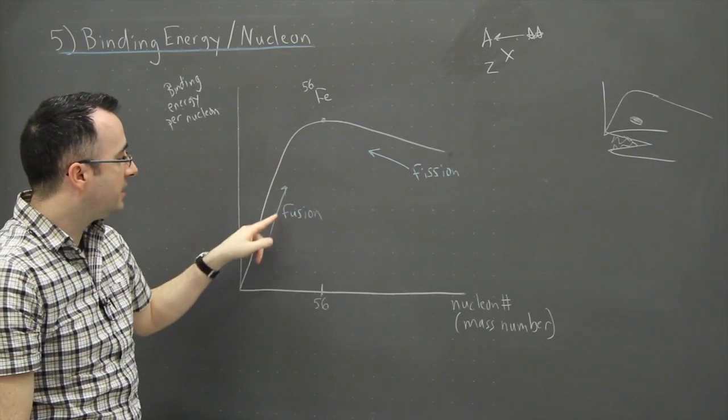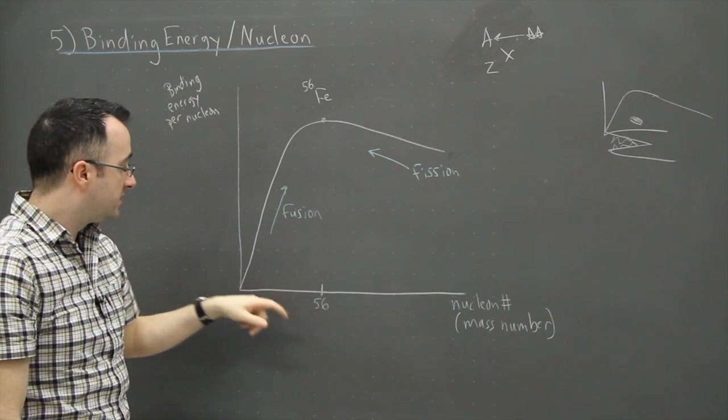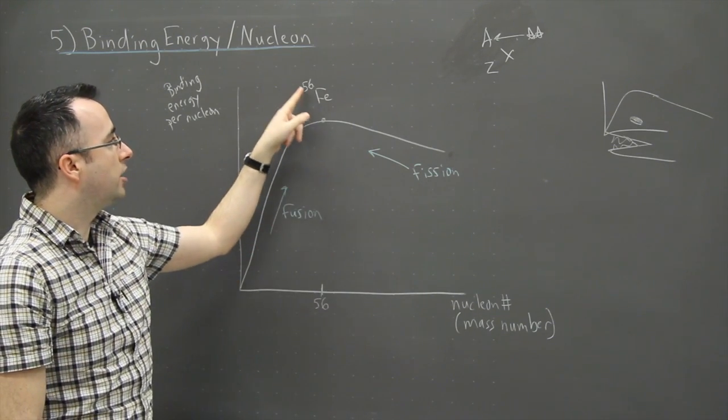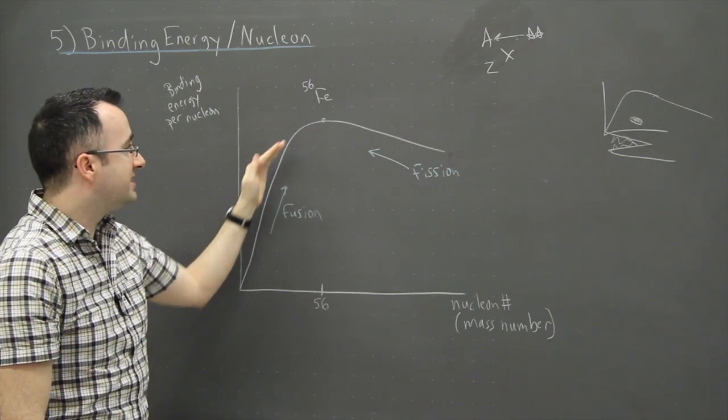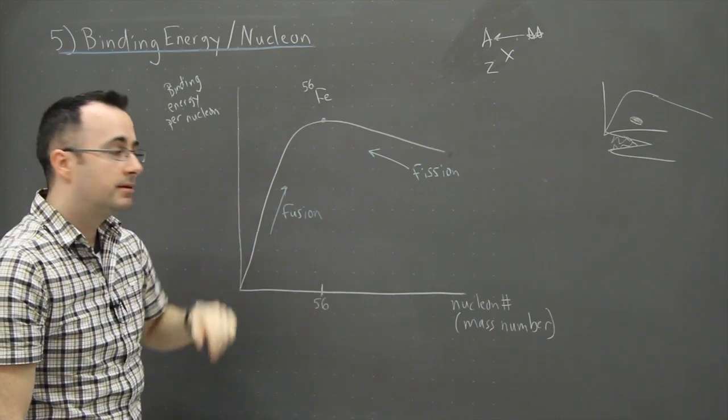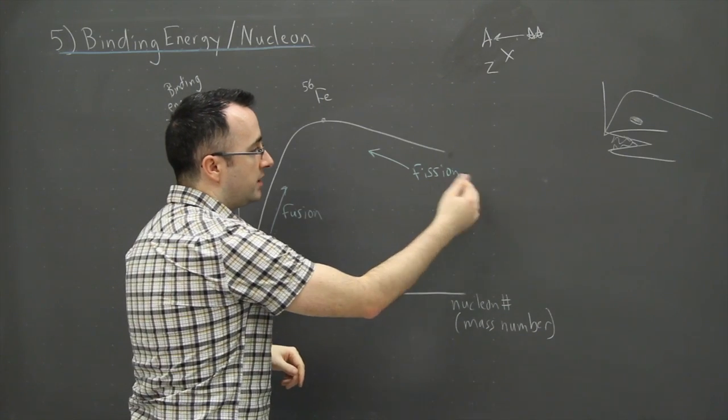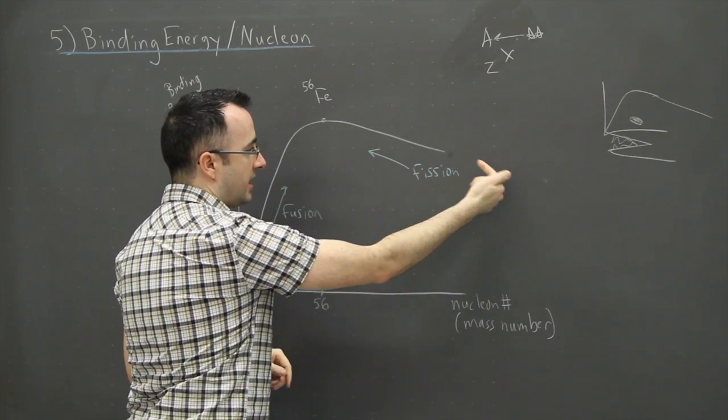That's why we point this way and say fusion. In other words, in order to make elements from zero all the way up to, well, iron 56, fusion is the main way to make these things. And then this one right here, you could say fission. Fission tends to happen only in things that start from over here and bring them in.